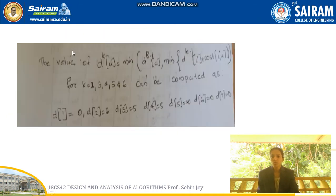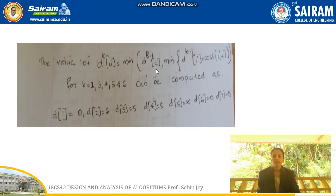The formula we use is: D(u) = minimum of D(u) and D(i) + cost(i, u). We find whichever is minimum and assign that value to D(u).